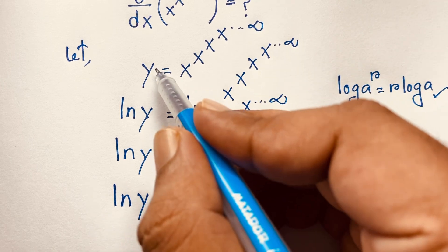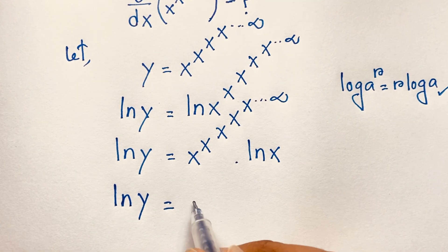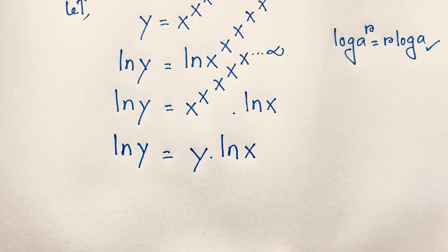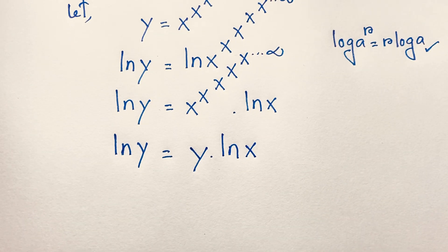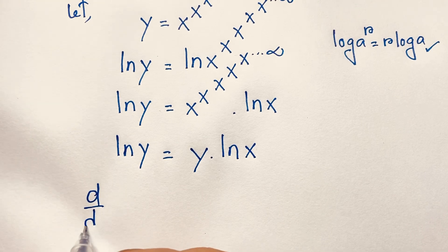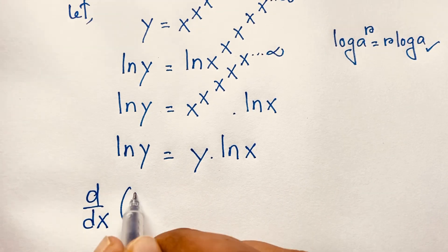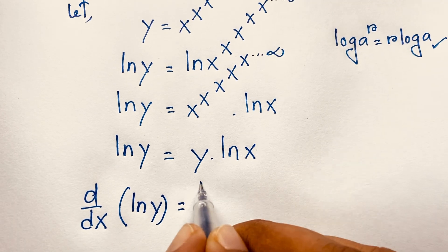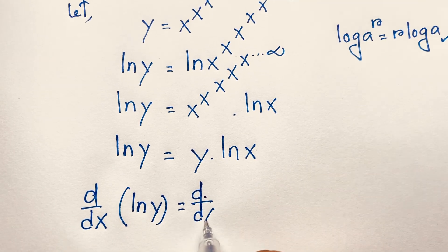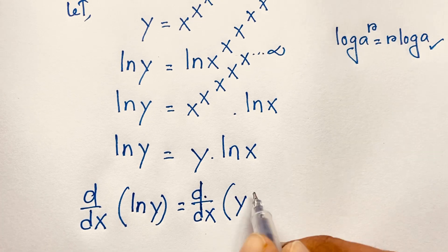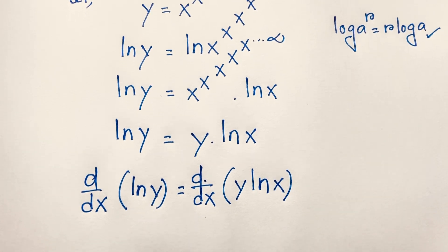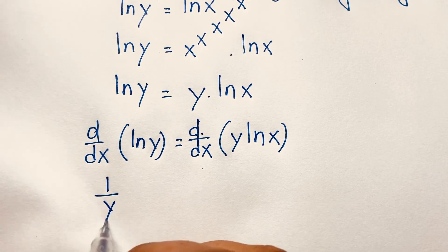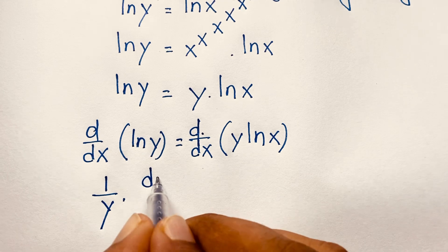We recognize that the infinite tower x^x^x^... is equal to y, so we substitute below to get: ln y equals y times ln x. Now I apply the derivative to both sides — that is, d/dx of ln y and d/dx of y ln x. The derivative of ln y gives one over y times dy/dx.